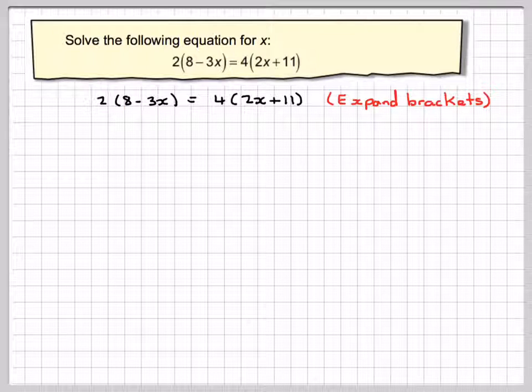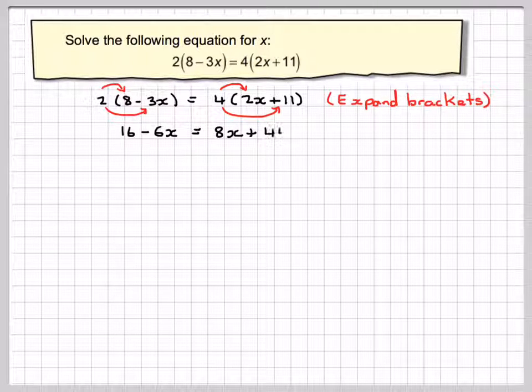To do that I need to do 2 times 8, which is 16, 2 times minus 3x, which is minus 6x, 4 times 2x, which is 8x, and 4 times 11, which is 44.